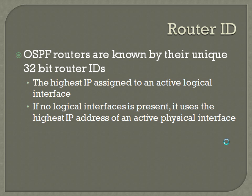If you've got a particular router with a loopback 0 as the only logical interface, whatever the IP of that loopback is will be your router ID. If no logical interfaces are present, it uses the highest IP address of an active physical interface — whichever physical interface has the highest IP address becomes your router ID.